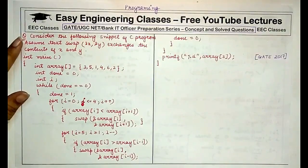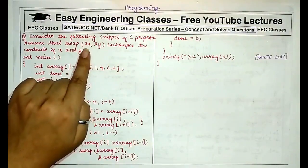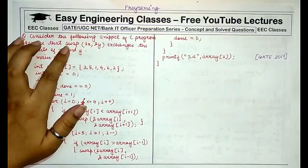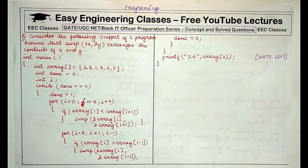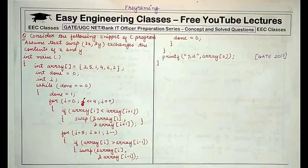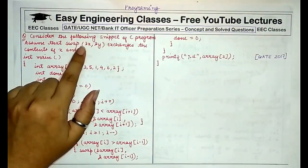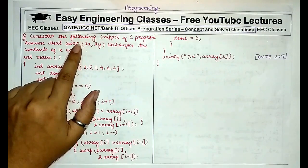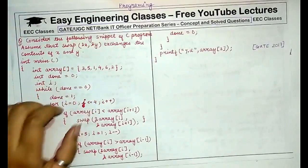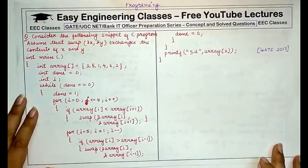The question provides a C program that uses a function swap with parameters and x and y, where the parameters are passed by reference or by pointer addresses. In the declaration, the pointers would be specified in the swap function, and at the time of calling the swap function, we would pass the addresses of these variables x and y. It is call by reference but using pointers.